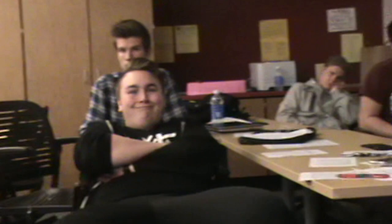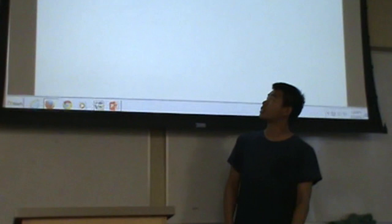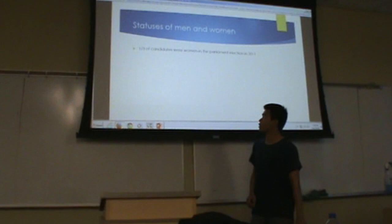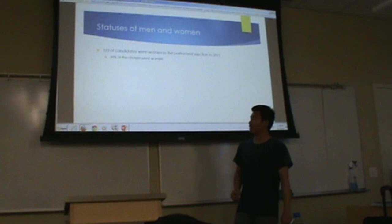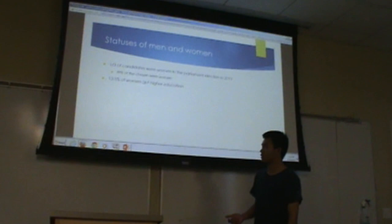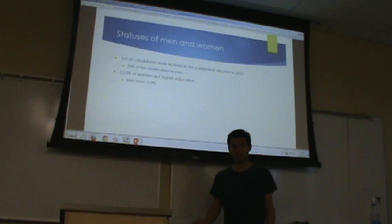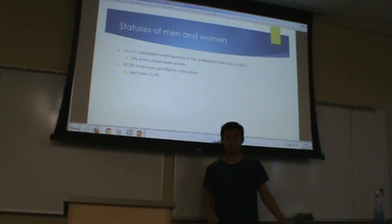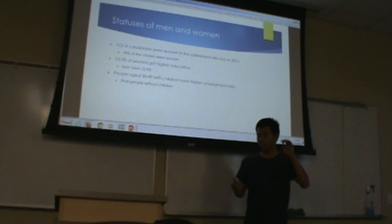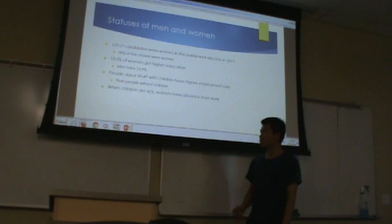My name is Marcus, and I want to talk about gender roles, statuses, and families in Denmark. One third of candidates were women in the 2011 parliament election, and 39% of those women were chosen. Women have 13.5% rate of higher education, while men have 12.9% — so women have 0.6% more higher education than men. People aged 30 to 49 with children have a higher employment rate than those without. When children are sick, women are more likely to be absent from work than men — actually about twice as likely.